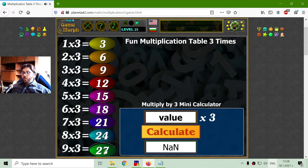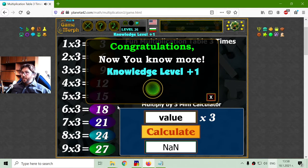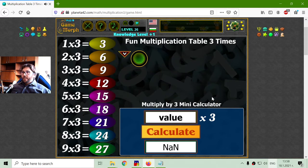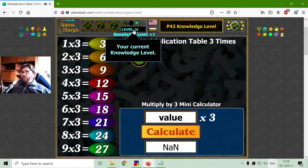3 multiplied by 9 is 27. I should know more, I got my knowledge level.